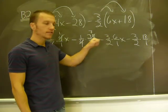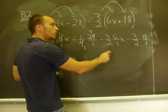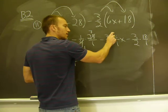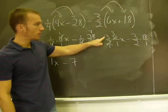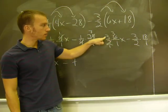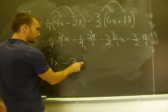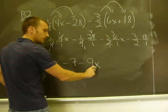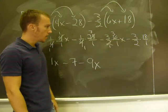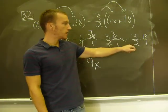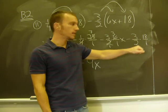Over here, negative three halves times six X. Two will go into two once, into six three times. I'm left with a three times a three, a negative three times a positive three. And don't forget your X.